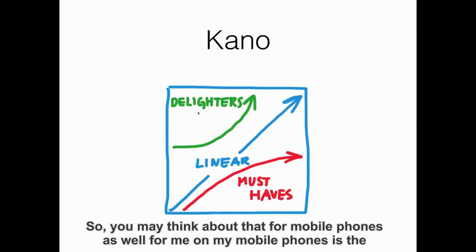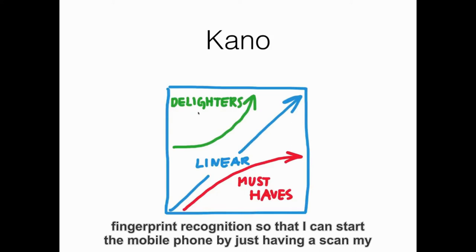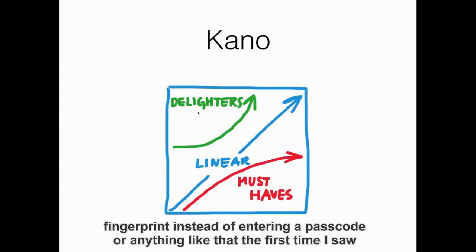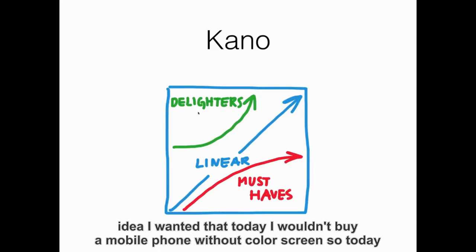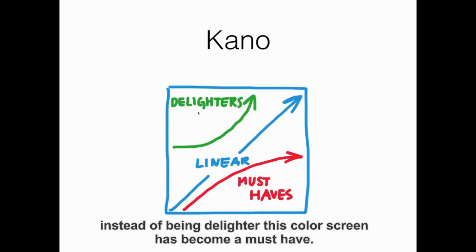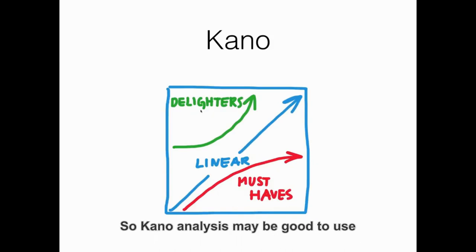For me, on my mobile phone, it's the fingerprint recognition so that I can start the mobile phone by just having it scan my fingerprint instead of entering a passcode. The first time I saw a color screen on a mobile phone, that was really delighting functionality — I had no idea I wanted that. Today, I wouldn't buy a mobile phone without a color screen. So instead of being a delighter, the color screen has become a must-have. Kano analysis may be good to use.